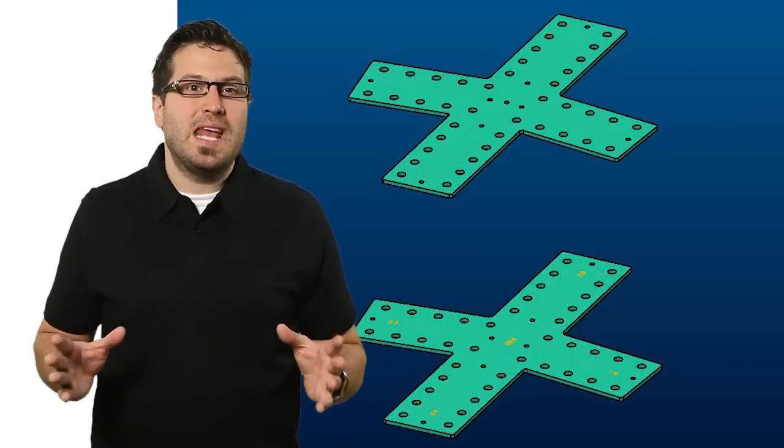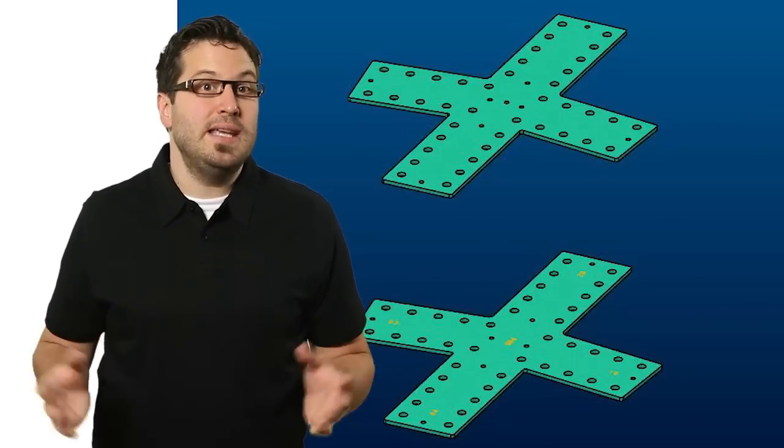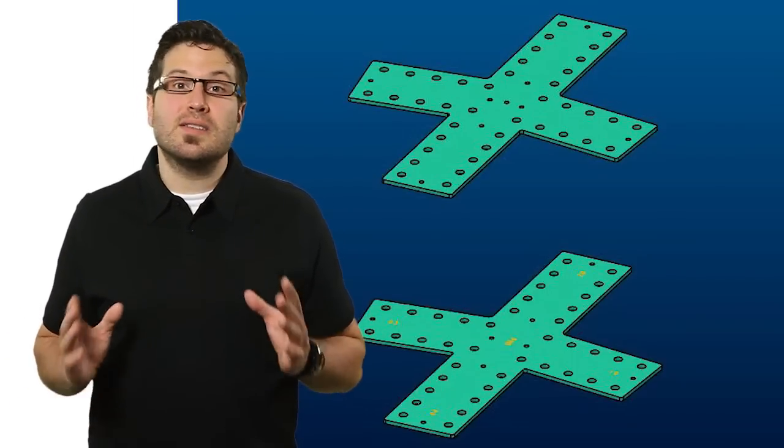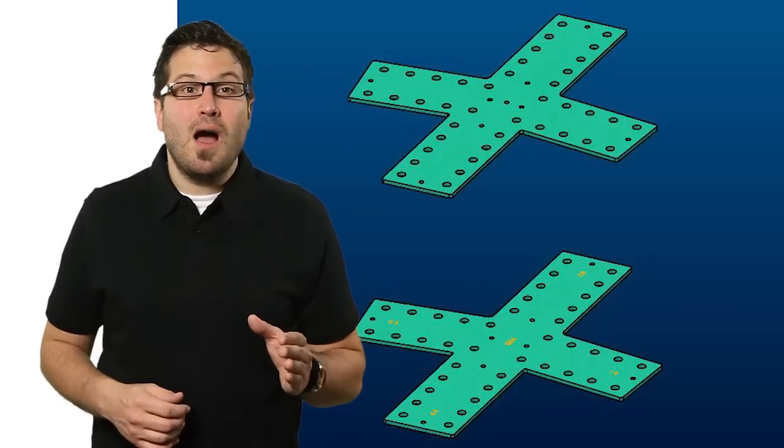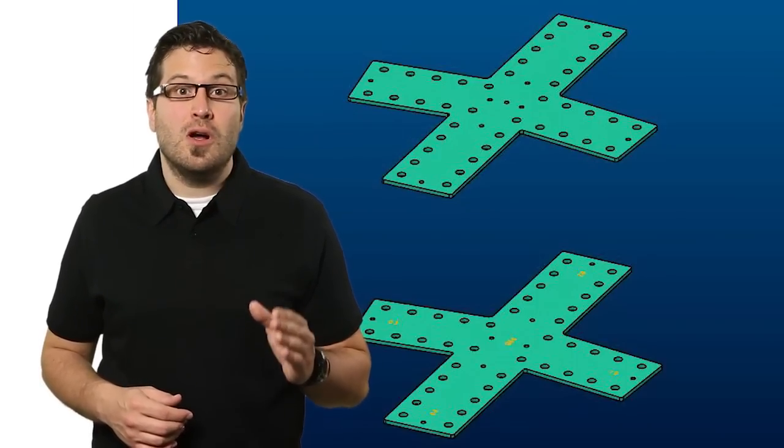Designing each hub individually would have taken longer than it takes a Twinkie to grow mold. To make sure the canopy was built before the release of Fast and Furious 18, Michael and his team created a smart model of the hub that compensated for the slope of the structure along all of its axes.